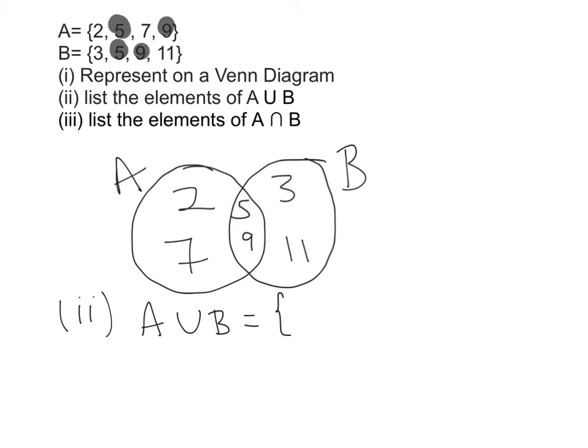I draw my curly brackets and reading it straight from my Venn diagram here, not the sets up above, I'm going to write down 2, 7, 5, 9, 3 and 11.